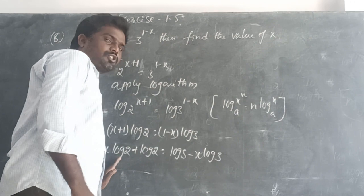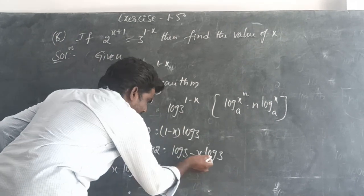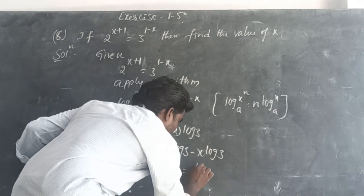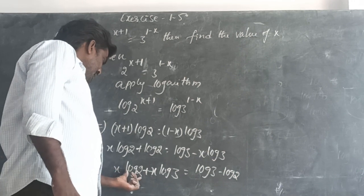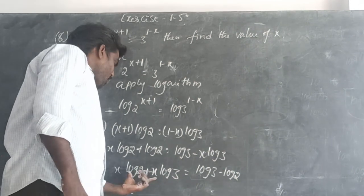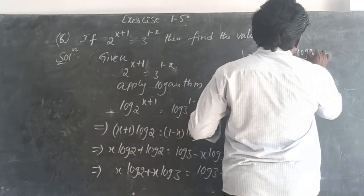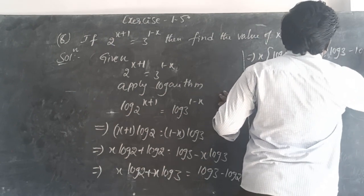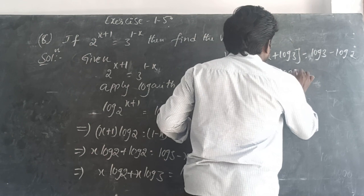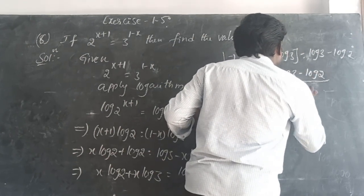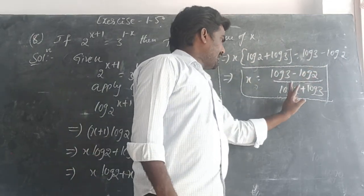Taking variable terms to one side and constant terms to the other: x log 2 plus x log 3 equals log 3 minus log 2. Taking x common from the left side: x(log 2 plus log 3) equals log 3 minus log 2. Therefore x equals (log 3 minus log 2) divided by (log 2 plus log 3).